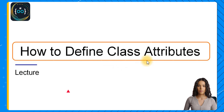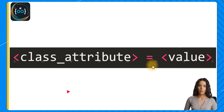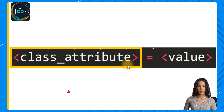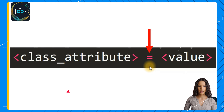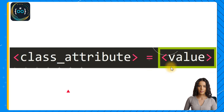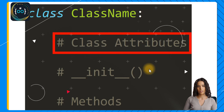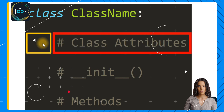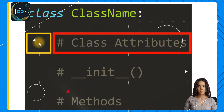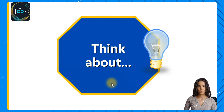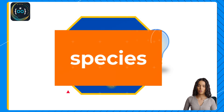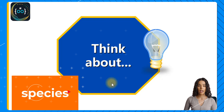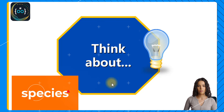Let's see how you can define class attributes in your Python classes. The syntax is very similar to a simple assignment statement — we write the name of the attribute, followed by an equal sign, and then the value we want to assign. Remember that they are usually defined before the init method in the class, and they have to be indented to be part of the class — four spaces or one tab, but four spaces is recommended according to the Python style guide.